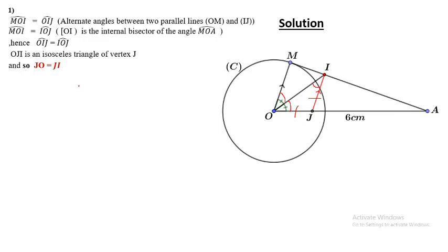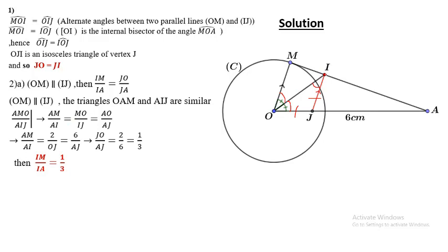Second part: Prove that IM divided by IA equals one over three. Look at the ratio IM over IA. How do I approach this? Since OM is parallel to IJ by construction of IJ, we can apply Thales' property. IM over IA equals JO over JA. Remember, whenever writing Thales' property relation, write the small over the large equals the small over the large.